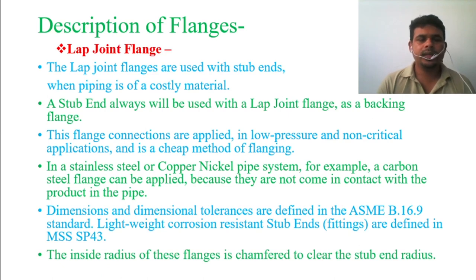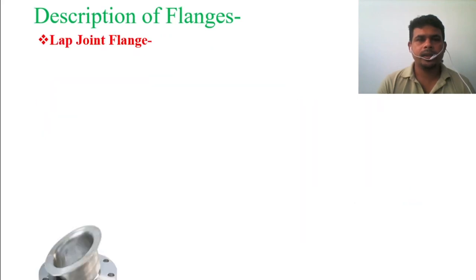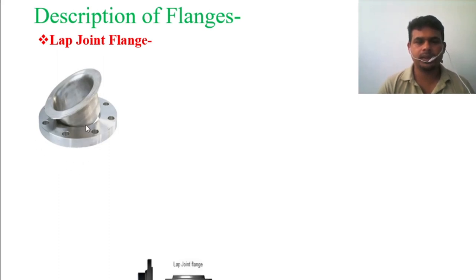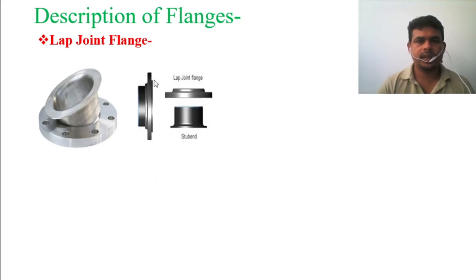The inner radius of these flanges is chamfered to clear the stub-in radius. Looking at the figure, you can see the stub-in and the flange together — this assembly is considered the lap joint flange. On the right side is a photo showing the lap joint flange and the stub-in, and both together form the complete lap joint flange assembly.